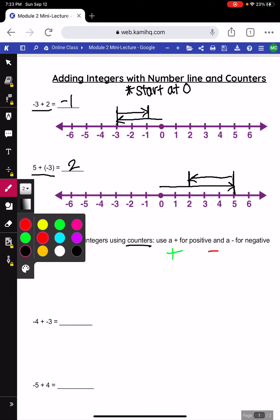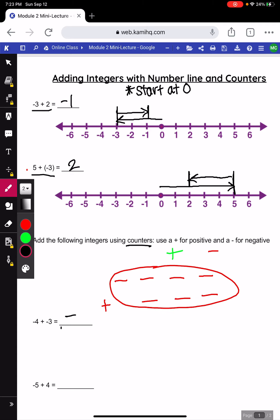So for our first question we have negative 4 plus negative 3. So how I chose my counters, I would have 4 negatives and I'm adding 3 more negatives. Now I can count, I have a total of 7 negatives there so my answer would be negative 7.